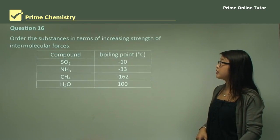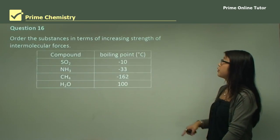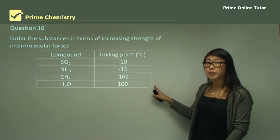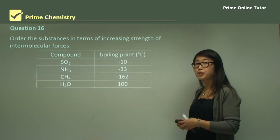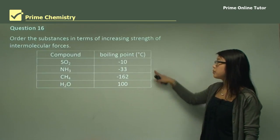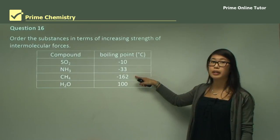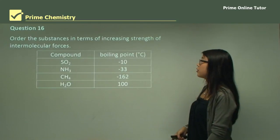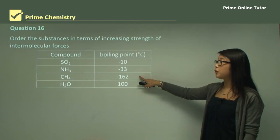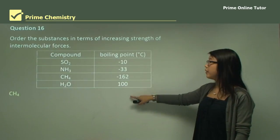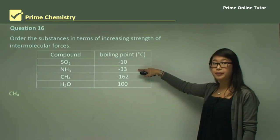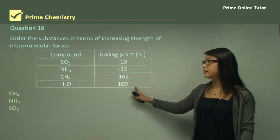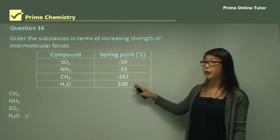Question 16: Order the substances in terms of increasing strength of intermolecular forces. Boiling points tell us how much energy is needed to break intermolecular forces. The lowest boiling point is CH₄, meaning it needs the least energy, then NH₃, then SO₂, and finally water — which needs the most heat energy. So the order of increasing intermolecular force strength is: CH₄ < NH₃ < SO₂ < H₂O.